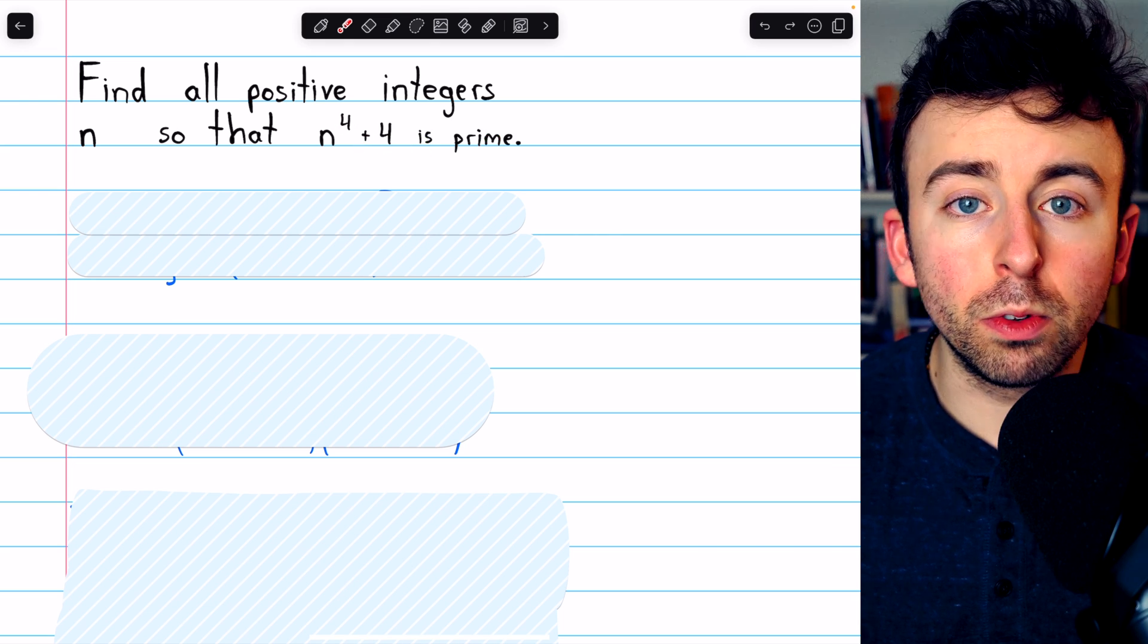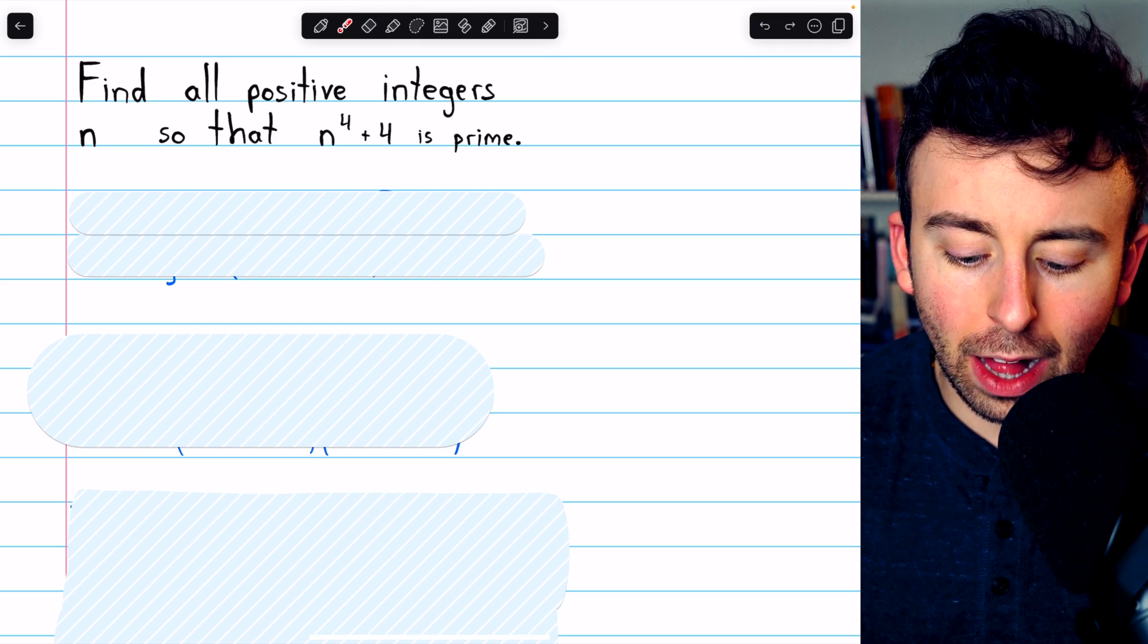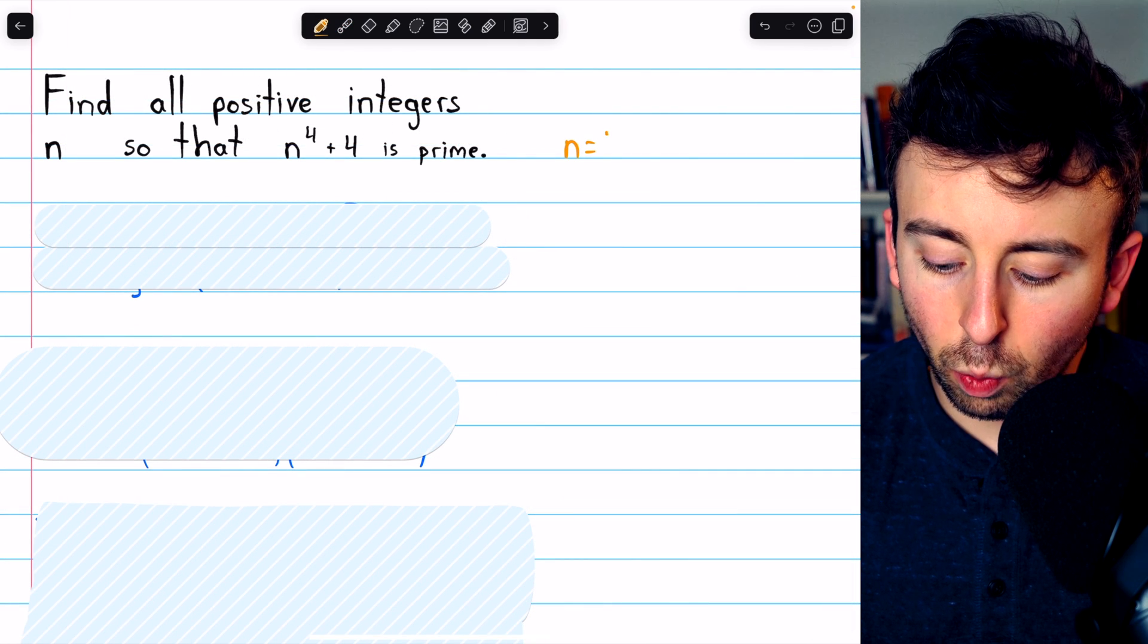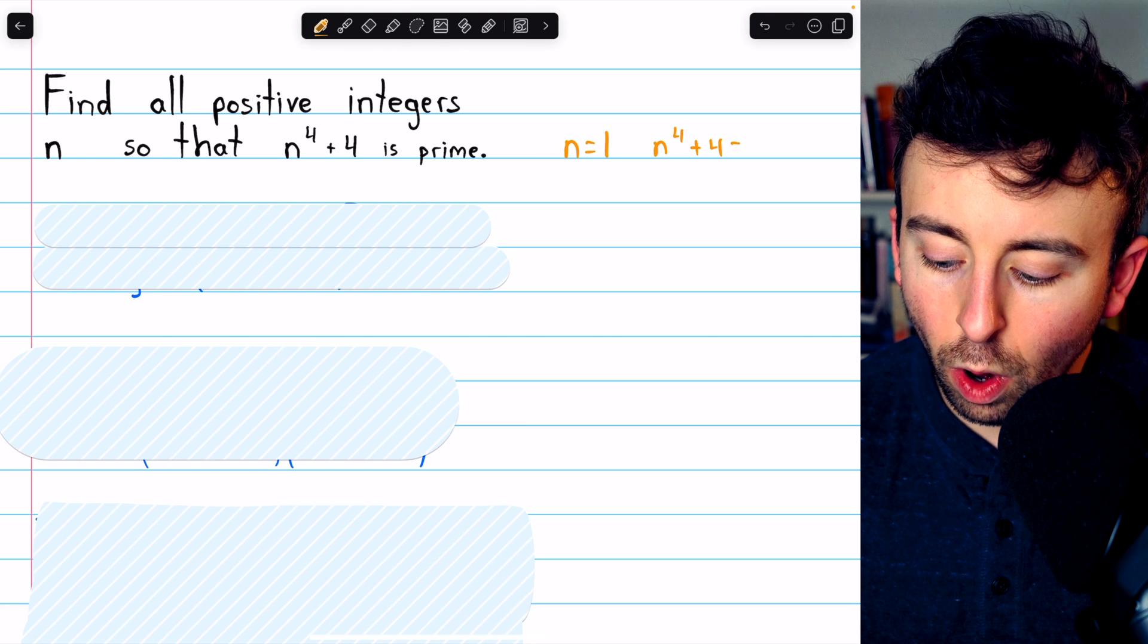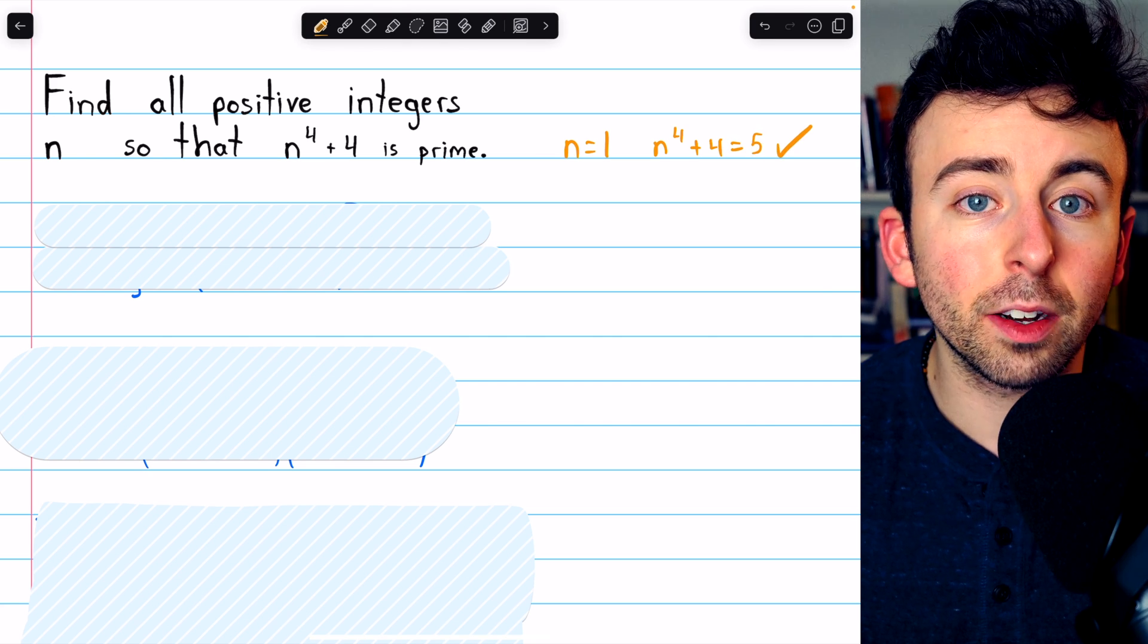Before we jump into the quick solution using a nice identity, let's just check out a few values of this expression for small values of n. If n equals 1, then n to the 4 plus 4 is 1 plus 4, which is 5, and this one is in fact prime.